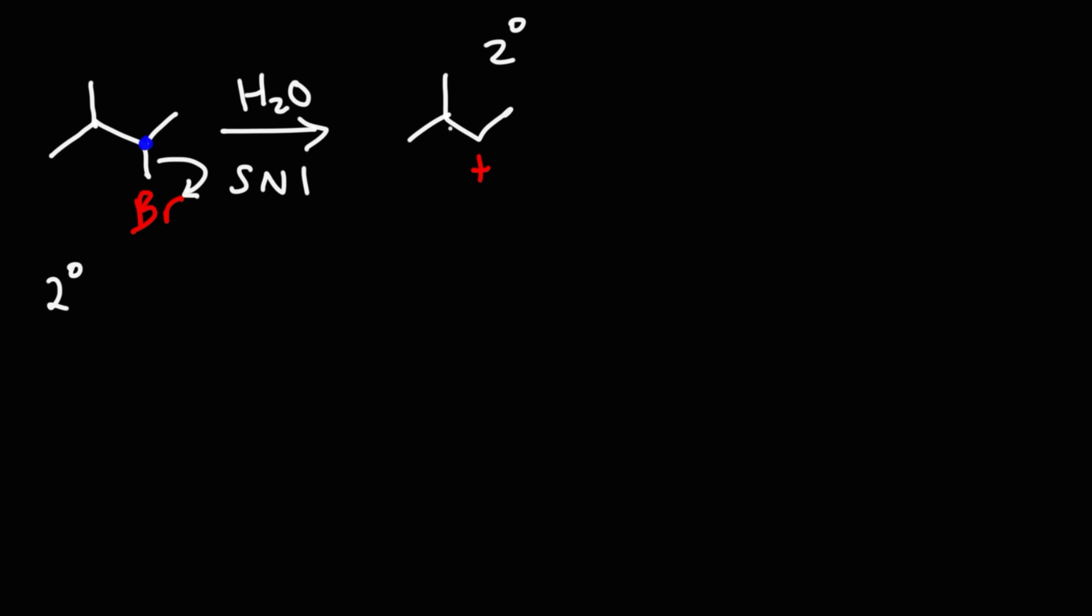Notice that the carbocation is adjacent to a tertiary carbon. When you see that, you're going to get a carbocation rearrangement, particularly a hydride shift. A hydrogen on a tertiary carbon is going to move to the carbocation. And here is that hydrogen now. This carbon lost the bond, so it's going to carry a positive charge.